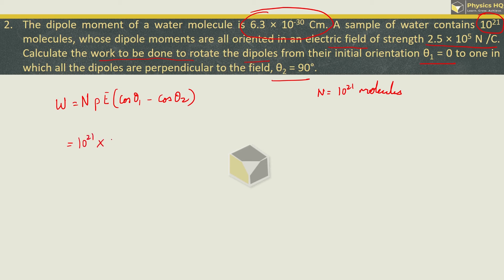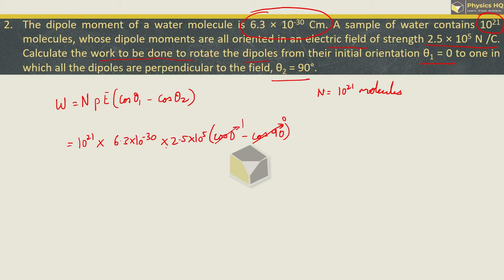Putting the values: N is 10 raised to 21, dipole moment is 6.3 into 10 raised to minus 30, electric field is 2.5 into 10 raised to 5. Cos of initial angle 0 is 1, and cos of final angle 90 is 0. Multiplying these together, we get the work done as 15.75 into 10 raised to minus 4 joule. I hope you all understood this.